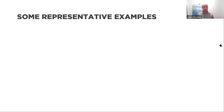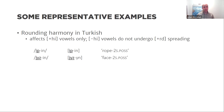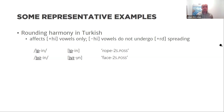As a warm-up, let's consider rounding harmony in Turkish. In Turkish, the round feature of a vowel affects high vowels to its right. We see 'dip' and 'us' followed by the second singular possessive suffix, and we see an alternation in rounding.